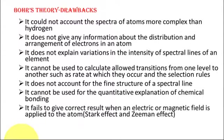These atomic models were not able to explain the fine structure of the spectral lines. To account for the fine structure of the spectral lines, Bohr's theory was useful to some extent but it also had some drawbacks. The drawbacks of Bohr's theory were that it could account for spectra of atoms only like hydrogen, which has only a single electron and single proton, and it could not account for the spectra of atoms more complex than hydrogen.